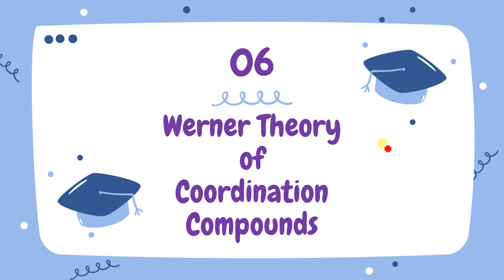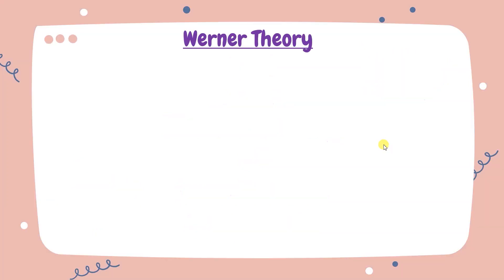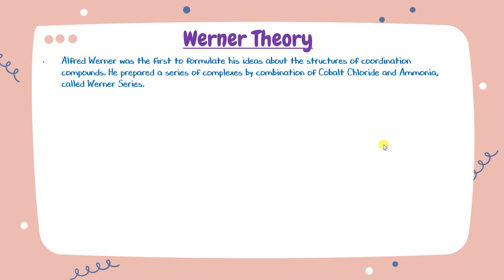Next is Werner's theory of coordination compounds. Werner's theory explains valencies: coordination compounds have two types — primary valencies and secondary valencies. Primary valencies are ionizable and give the oxidation number; secondary valencies are non-ionizable and give the coordination number. Alfred Werner was the first to formulate ideas about the structure of coordination compounds.